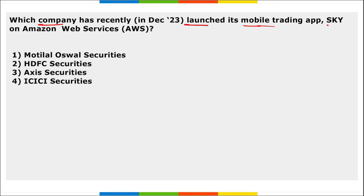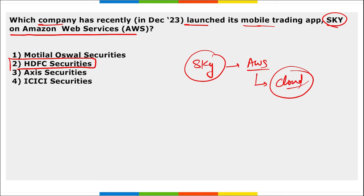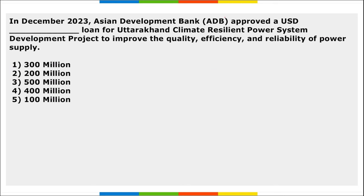Next: which company recently launched their mobile trading application named SKY on AWS (Amazon Web Services)? It was launched by HDFC Securities. This is a cloud platform-based mobile trading application.